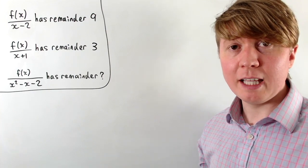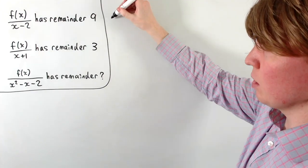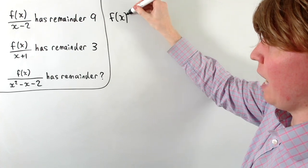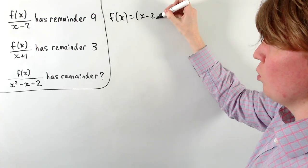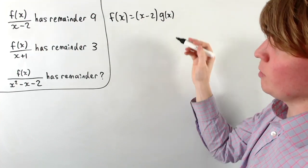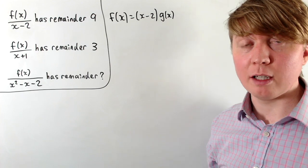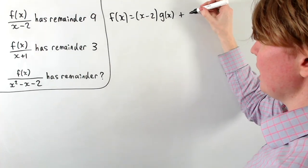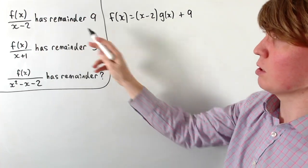When we divide by x minus 2, what this really means is we're trying to factorize f(x) as x minus 2 times some other polynomial, let's call this g(x). But we can't do this because x minus 2 doesn't actually go into f(x), and we get a remainder plus 9. So this is how you should interpret this first statement.